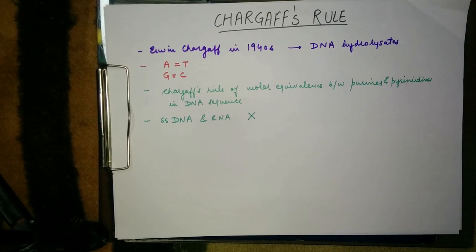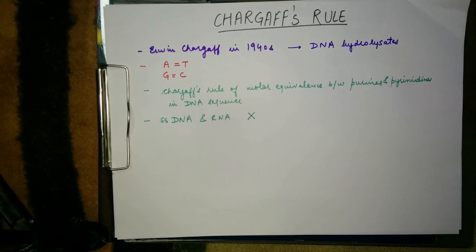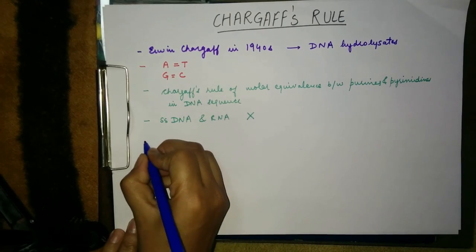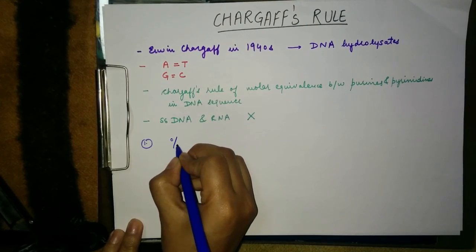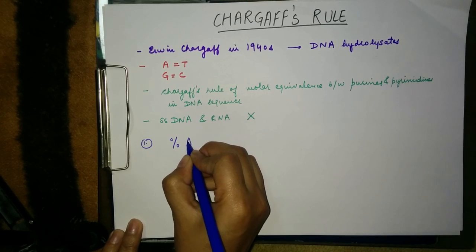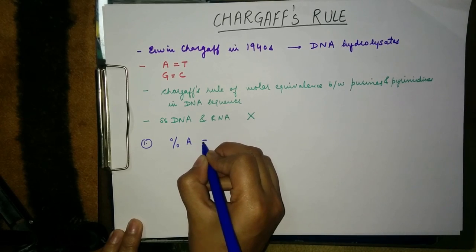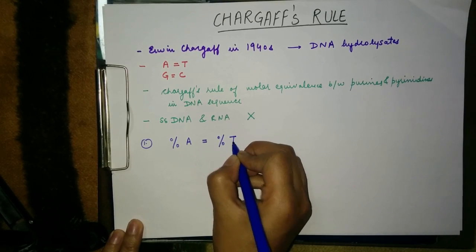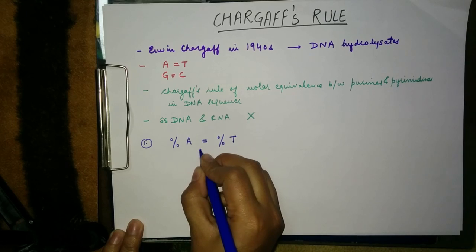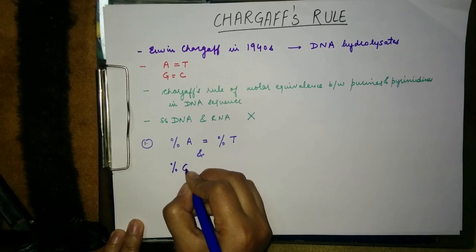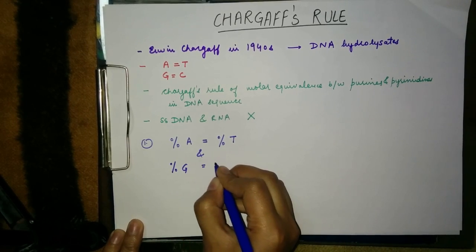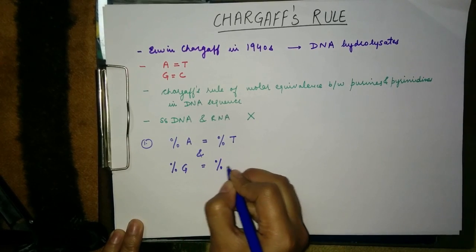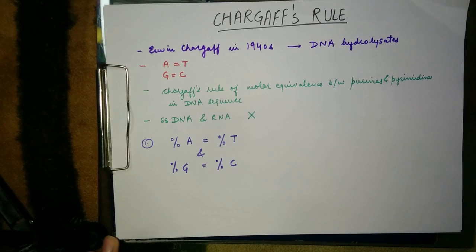To sum this video up, according to Chargaff's rule: number one, the percentage of adenine residues is equal to the percentage of thymine residues, and the percentage of guanine residues is equal to the percentage of cytosine residues.